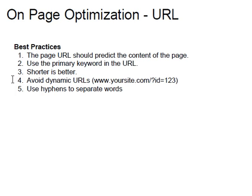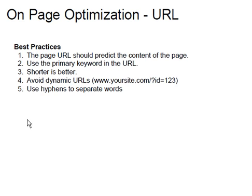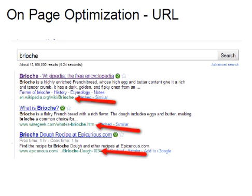This is relevant for people using WordPress as a platform, where you can set the permalinks to either stay dynamic — in which case it uses what's called a session ID, which has no meaning to a reader — or you can change it so that it uses normal English words. You also want to use hyphens to separate words instead of underscores or any other character.